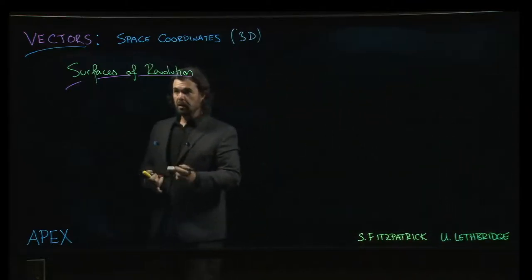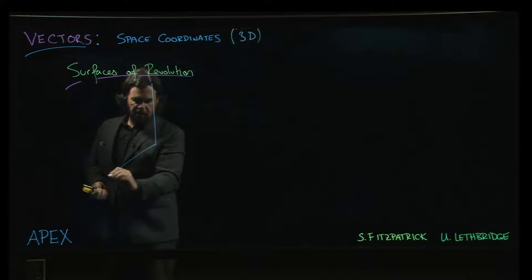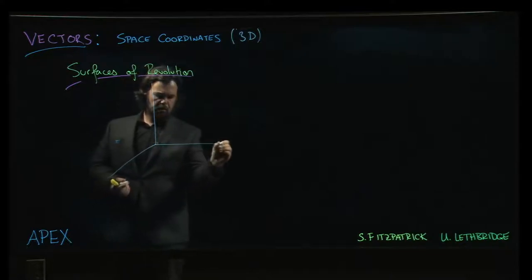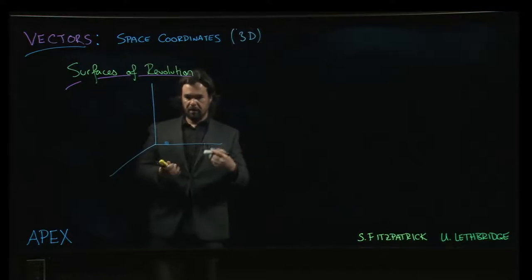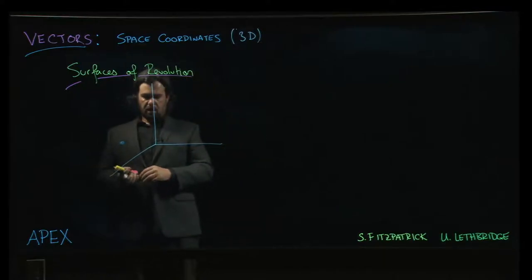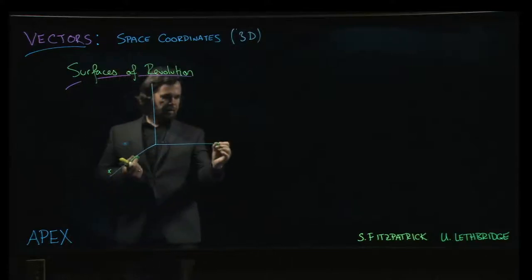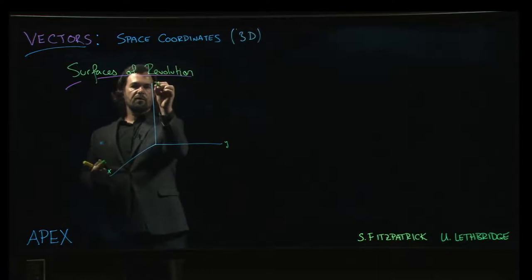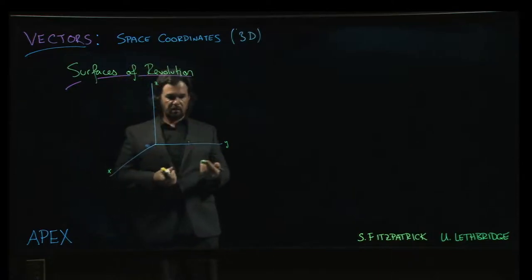All right, so next up we're going to look at surfaces of revolution, which is something that we've seen before, back when we were doing applications of integration way back in Chapter 7. We were doing washer method, shell method, these sorts of things. But now we're going to try to do it in 3D and actually think about what are the equations of those surfaces that we created when we tried to find those volumes and surface areas and so on.